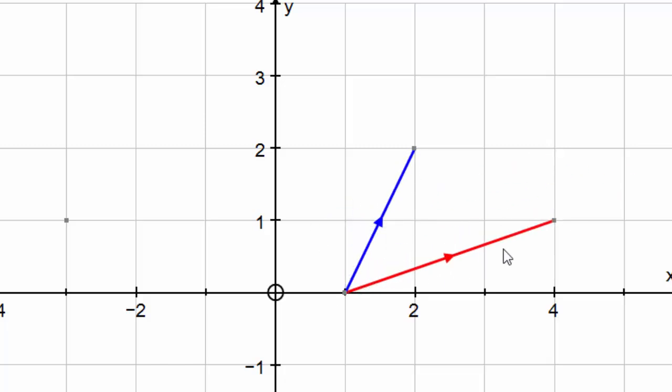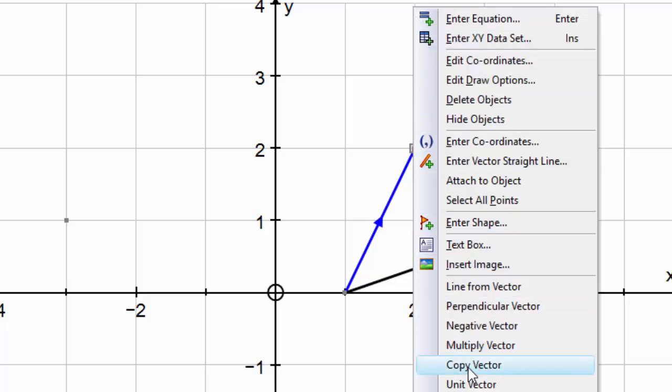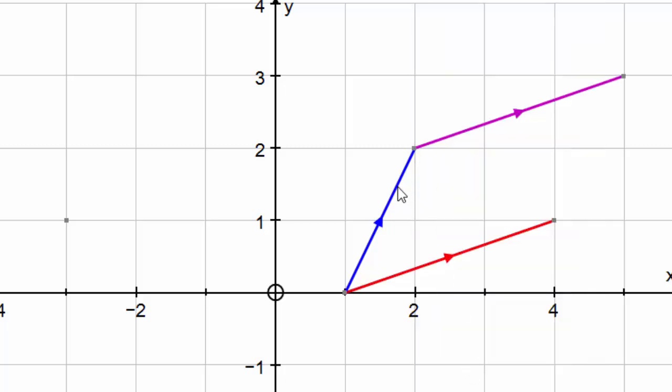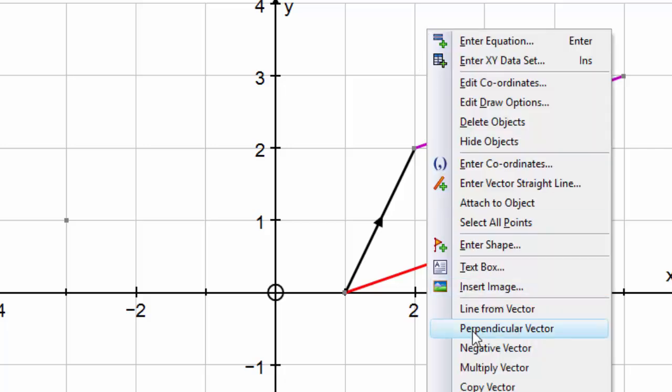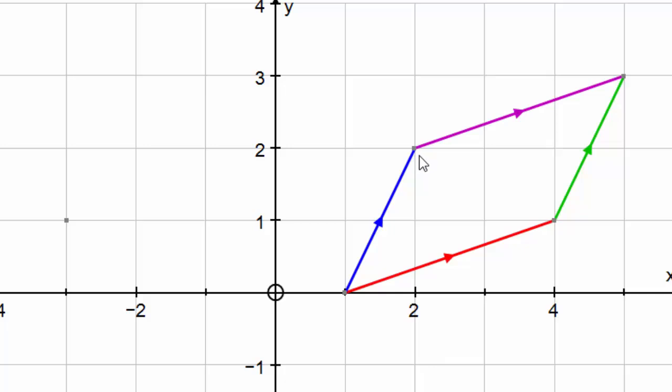Alright, now because that vector could be anywhere, we can actually copy it across to here. We must always select a point if we want to do any vector operation in Autograph. So let's copy the vector. And let's copy this vector and put it here and right click, copy vector. So we have created a parallelogram made up of those two vectors.